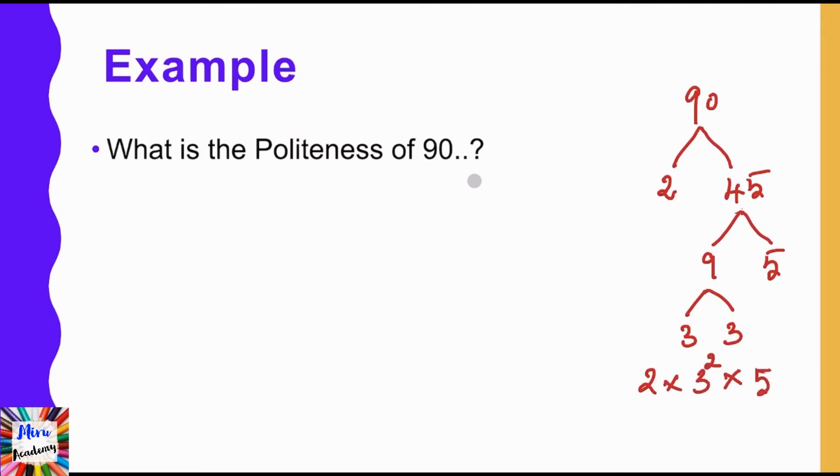So the prime factor of 90 is 2 into 3² into 5¹. So 90 can be written as 2 × 3² × 5¹. What is the power of 3? It's 2. And the power of 5 is 1. We have to exclude 2 and we have to take the power of the other prime factors, that is 2 and 1.